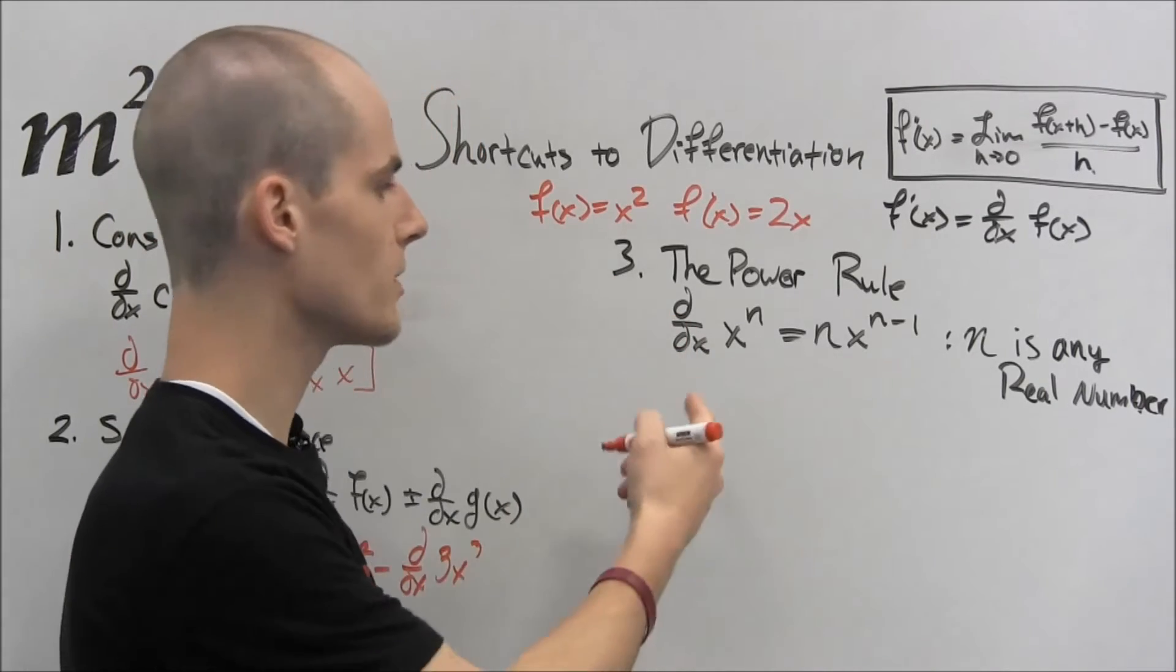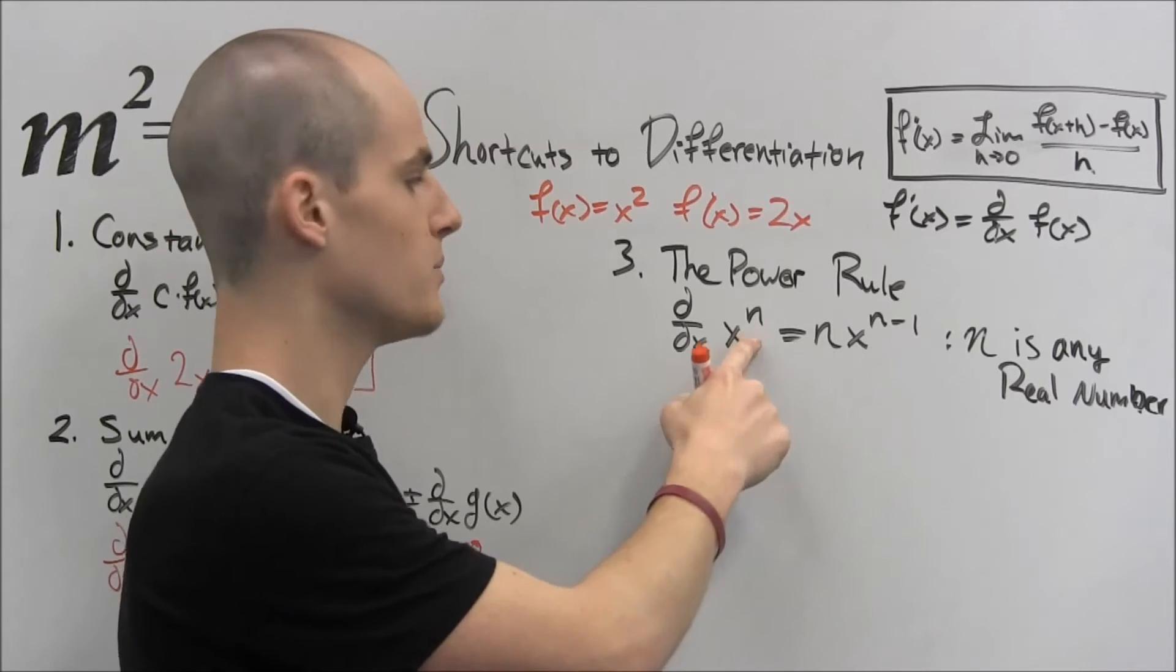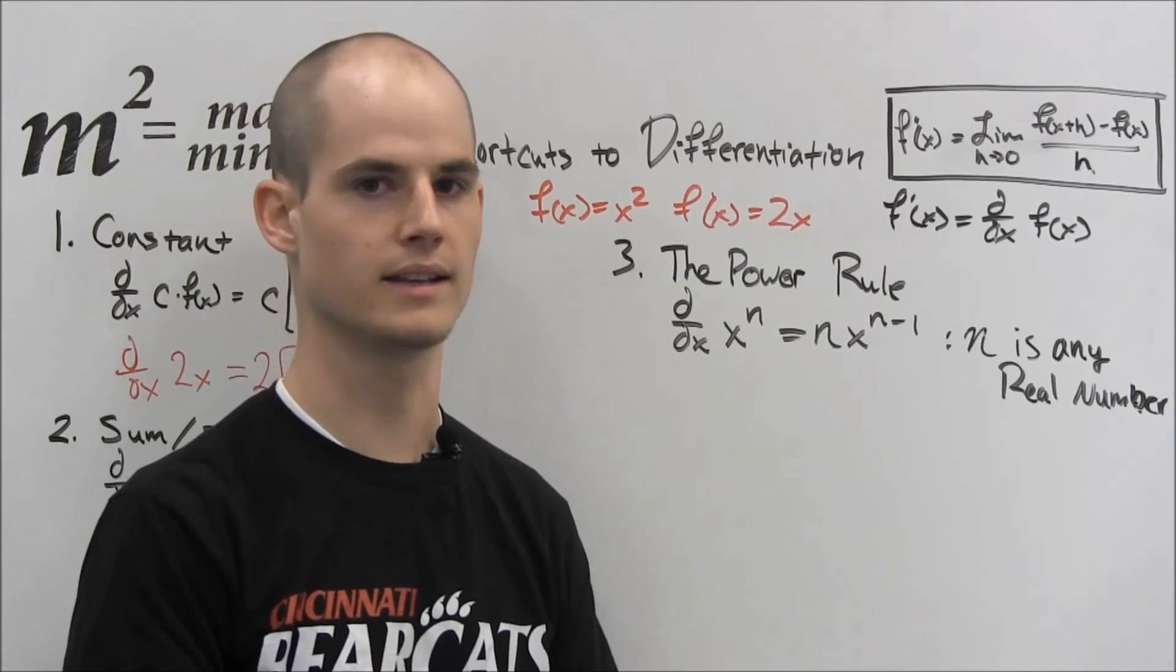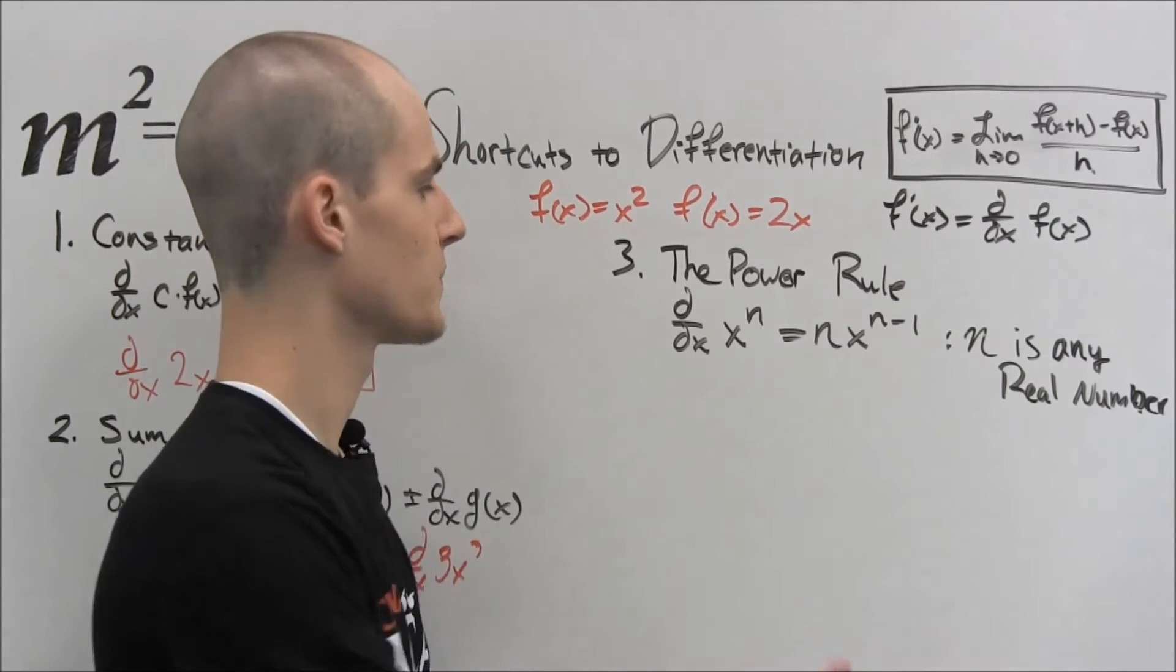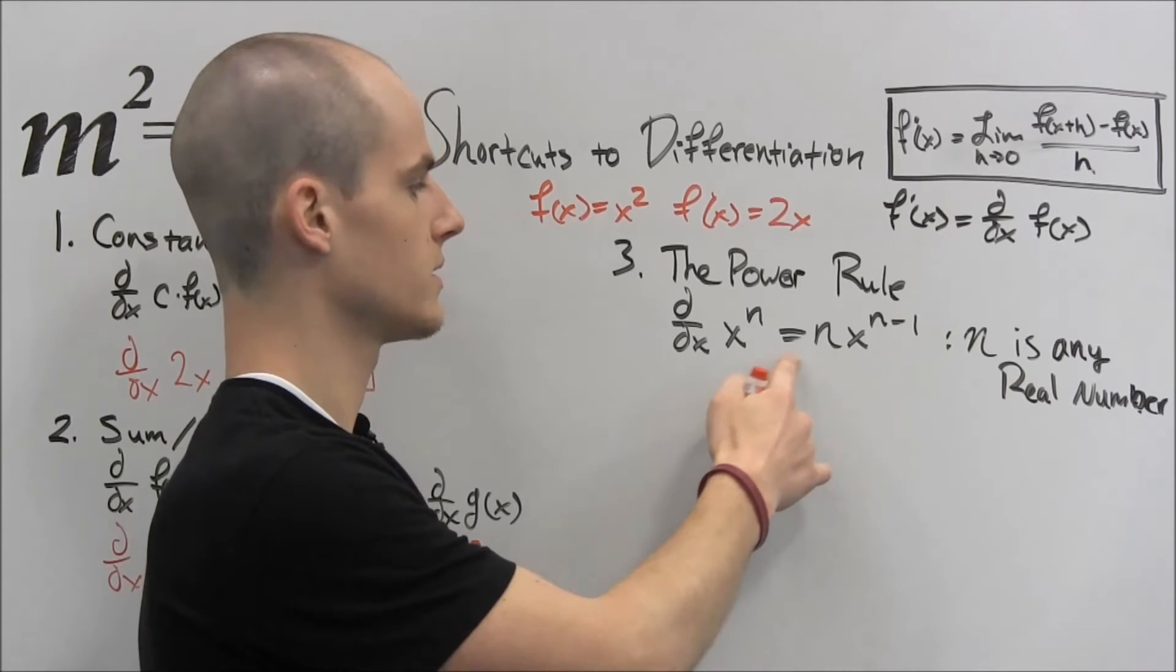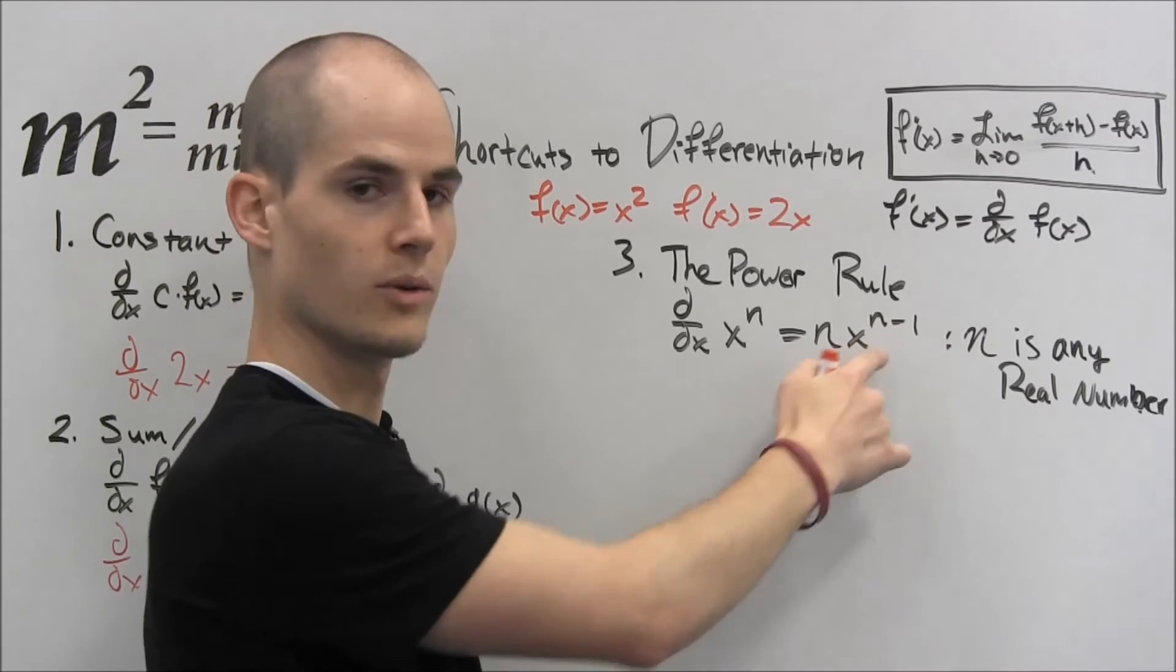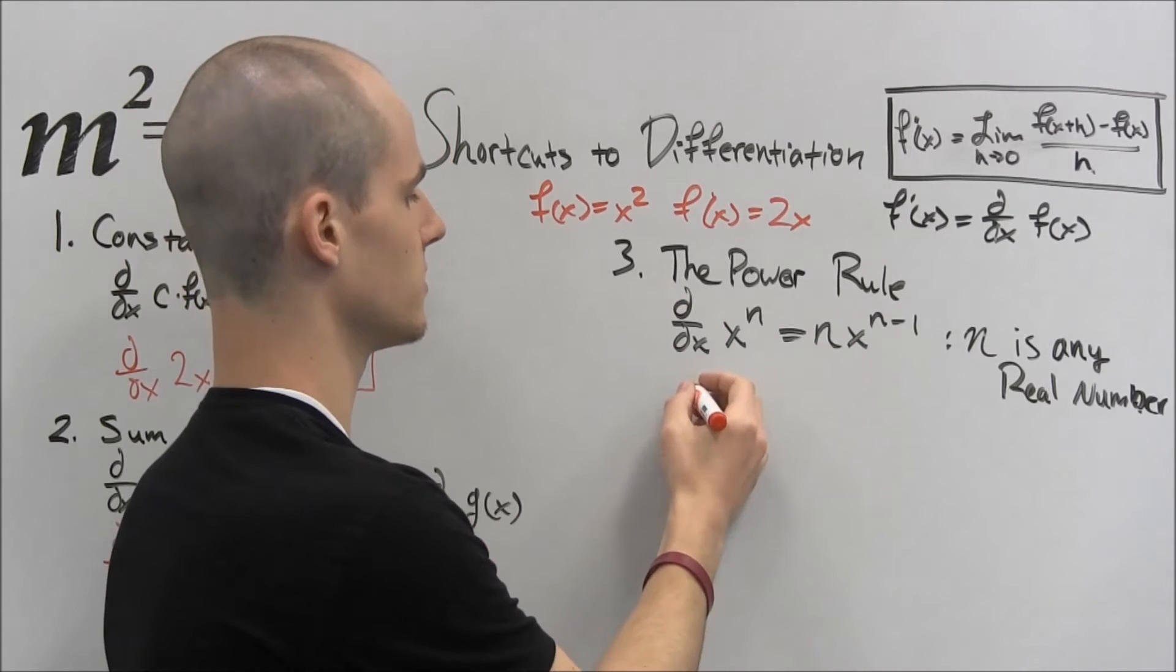This is the power rule. The power rule says, if we have the derivative of x to an n power, where n is any real number, that also includes pi and e and 2, 3, 4, anything, negative 5, all that. So if you take the derivative of this, we bring this n down in front and lower the power by 1. Kind of weird to see. But what that is, is let's do this exact example.